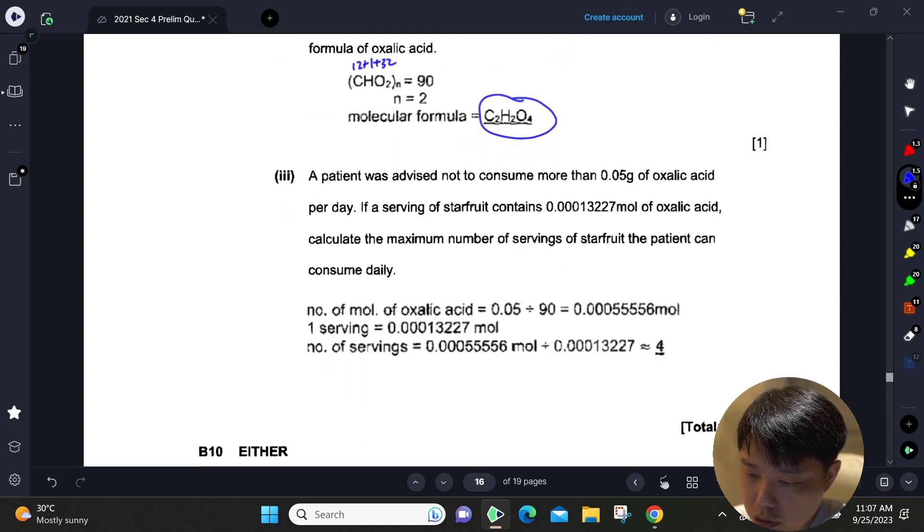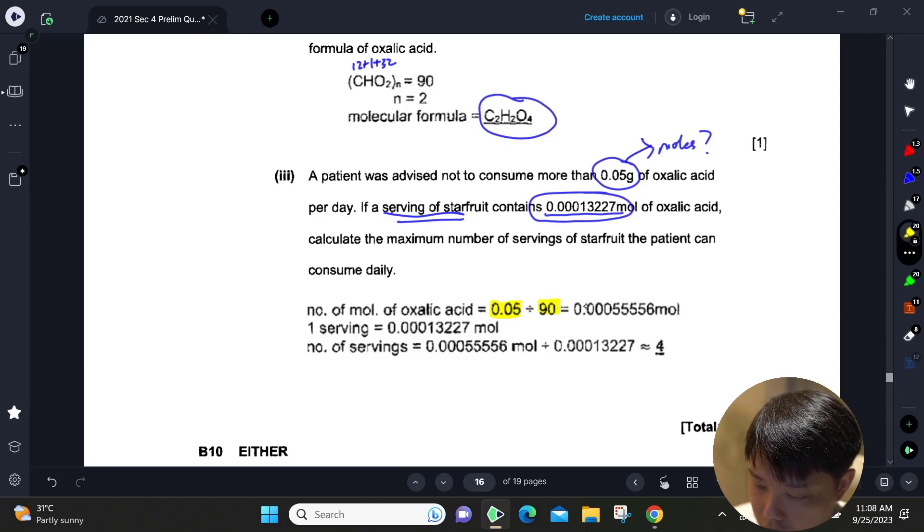The last part: A patient was advised not to consume more than 0.05 grams of oxalic acid per day. If a serving contains 0.001327 moles of oxalic acid, calculate the maximum number of servings. We work out 0.05 grams - how many moles is that? 0.05 divided by the Mr is 0.000555556 moles. We take the maximum amount the patient can consume and divide by the moles in one serving, so we get approximately four servings.